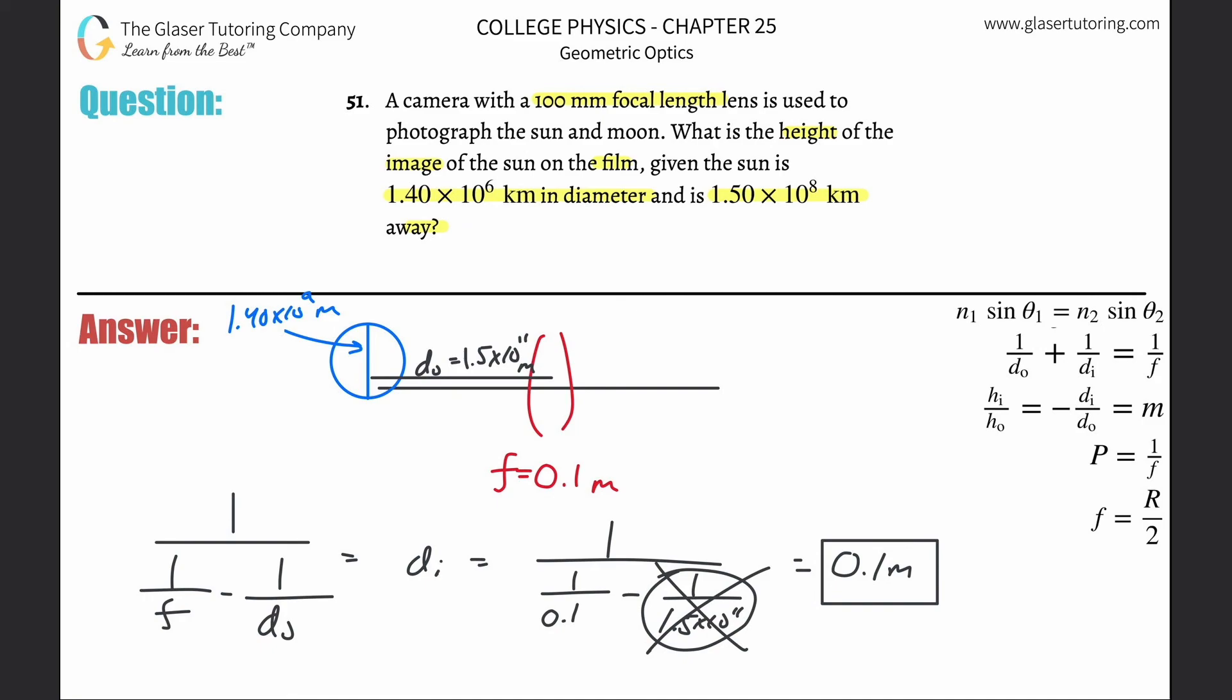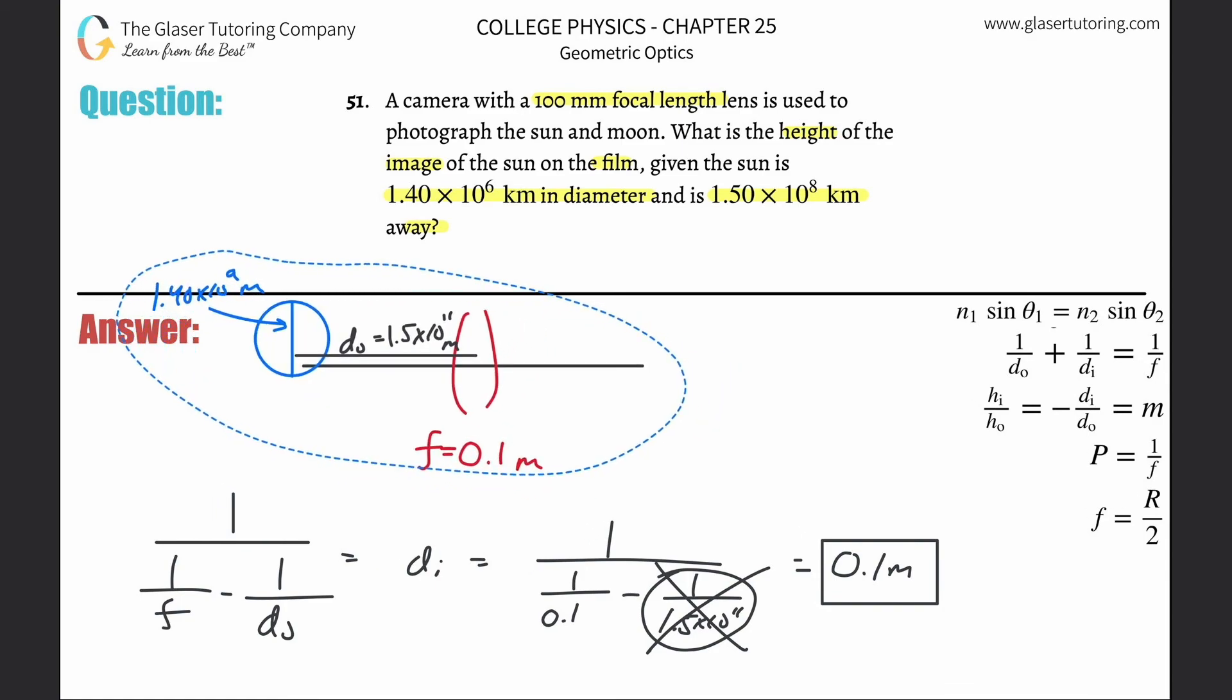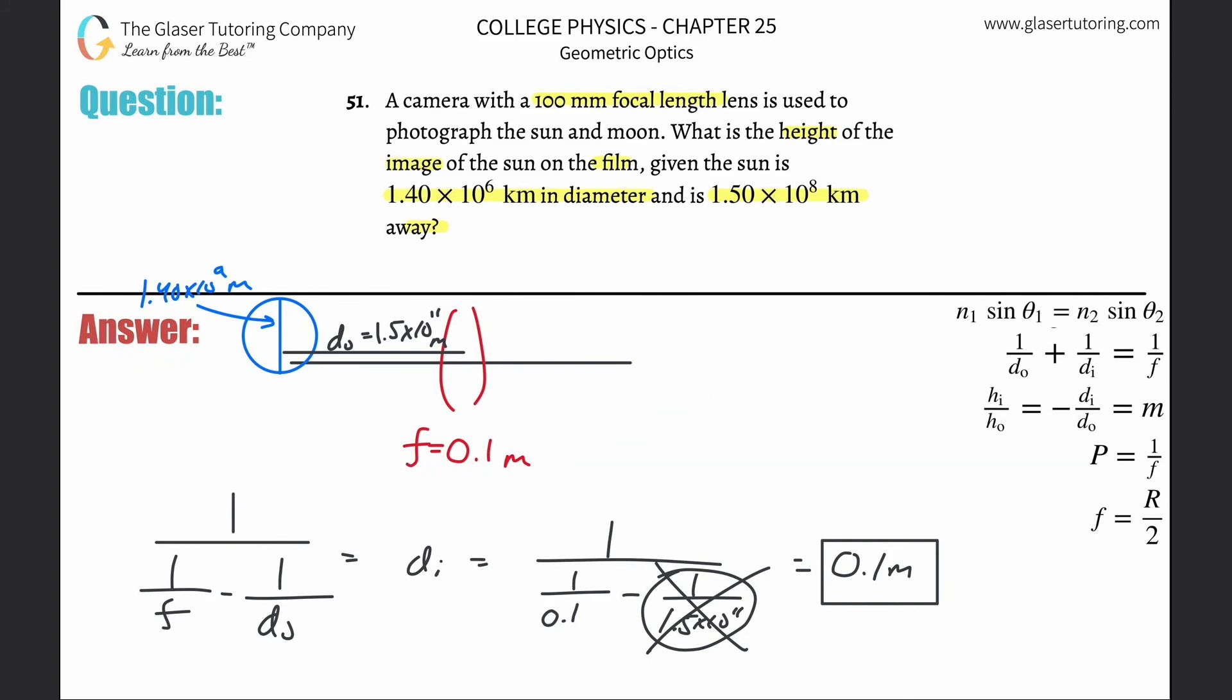Now that I know the image distance, I can finally use my equation. Let's use the height of the image divided by the object's height. That is going to equal the negative image distance divided by object's distance from the lens. So if I want the height of the image, just simply cross multiply this on over.